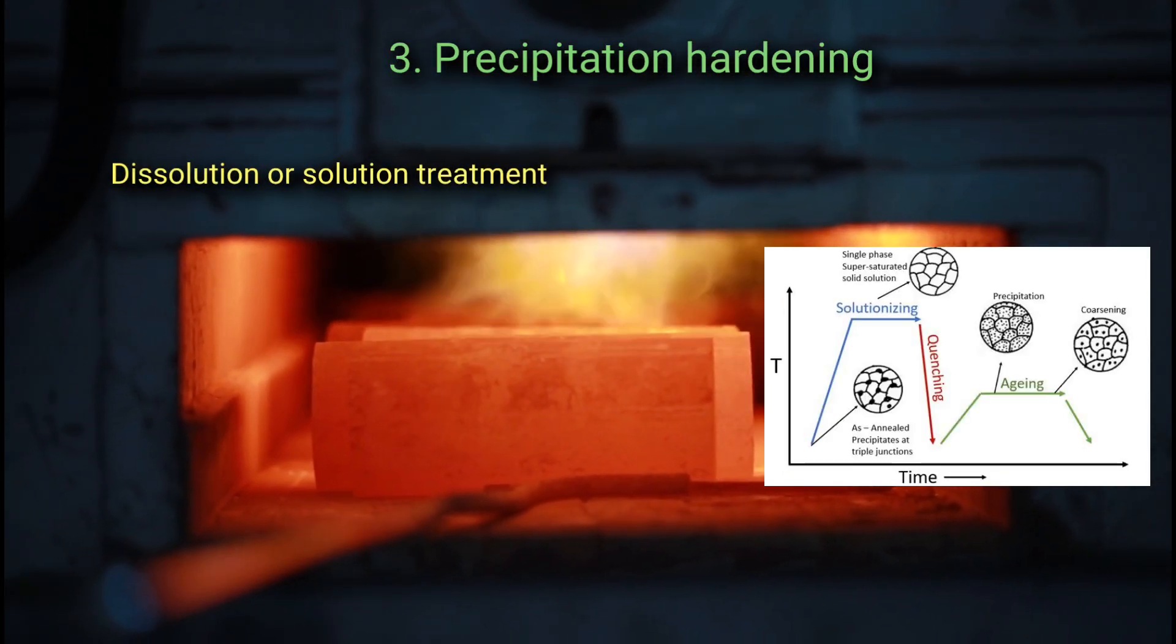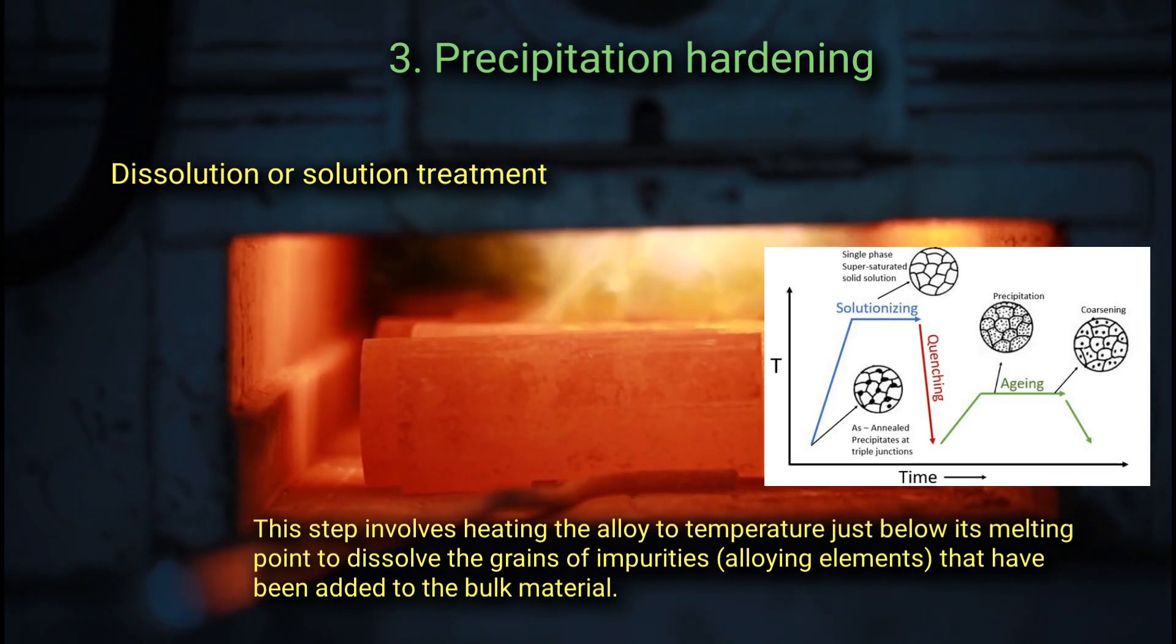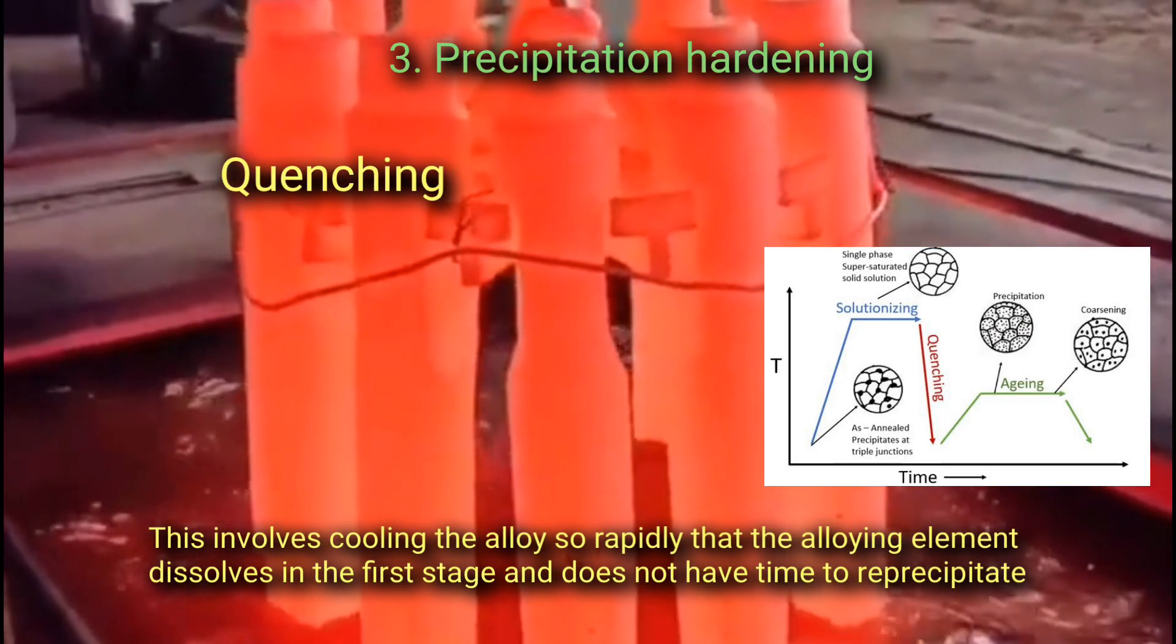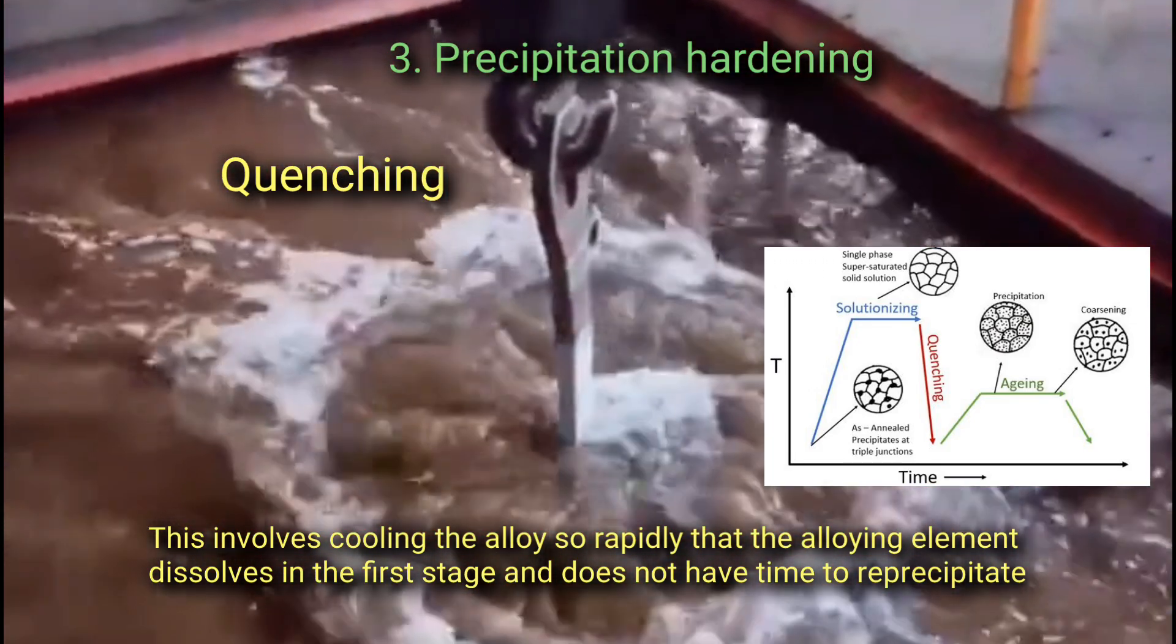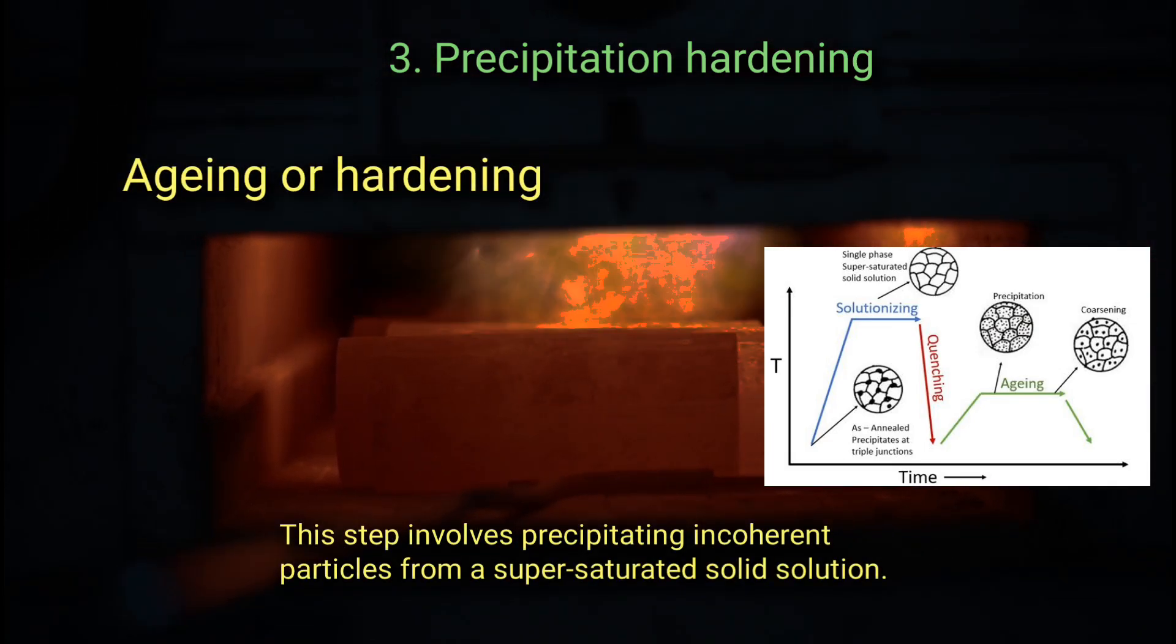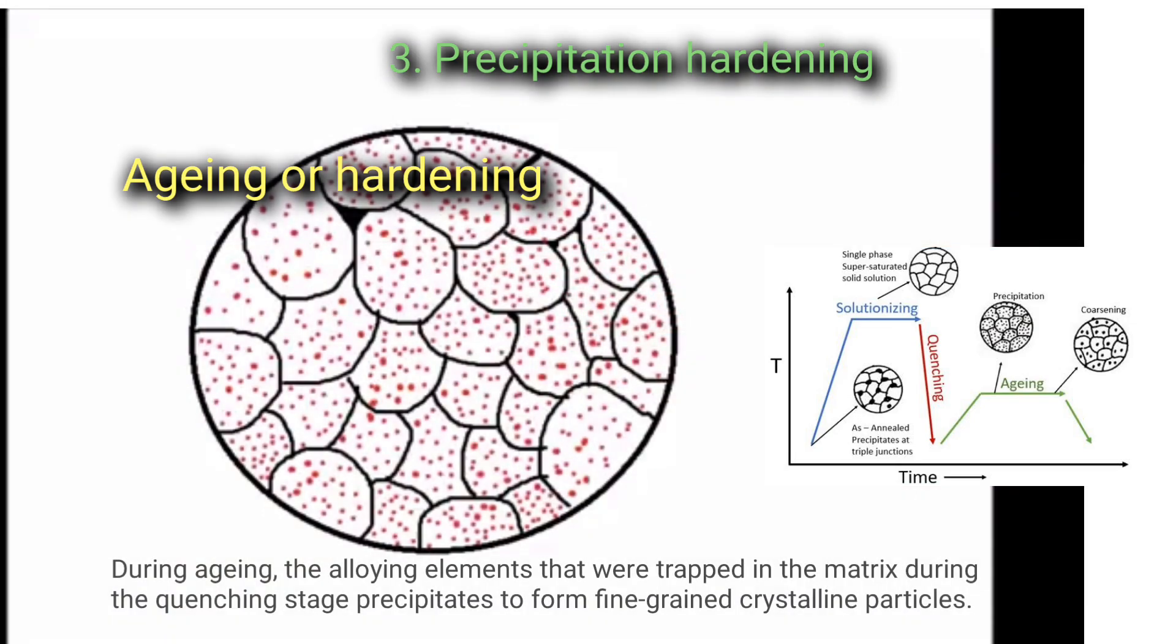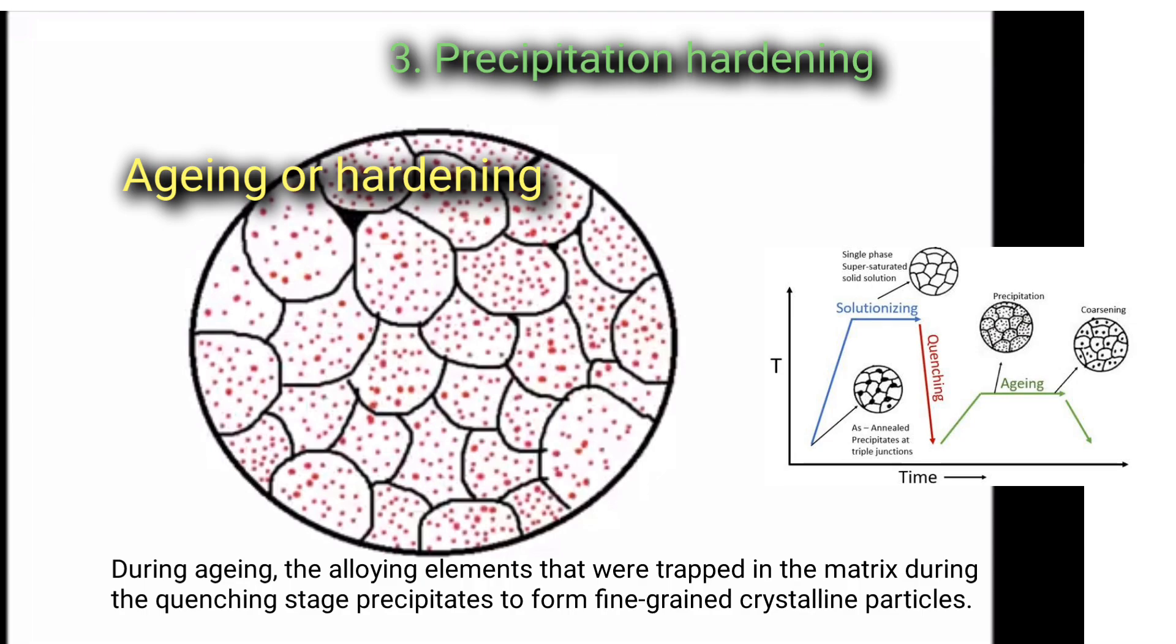The dissolution or solution treatment: This step involves heating the alloy to a temperature just below its melting point to dissolve the grains of impurities or alloying element that have been added to the bulk material. Quenching: This involves cooling the alloy so rapidly that the alloying element dissolved in the first stage does not have time to reprecipitate. Aging or hardening: This step involves precipitating incoherent particles from a super saturated solid solution. This involves baking or aging the alloy at a relatively low temperature. During aging, the alloying elements that were trapped in the matrix during the quenching stage precipitate to form fine-grained crystalline particles.